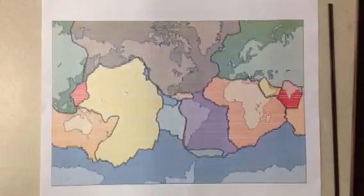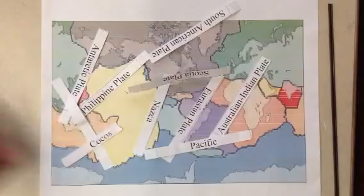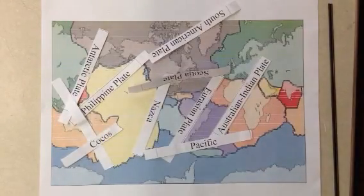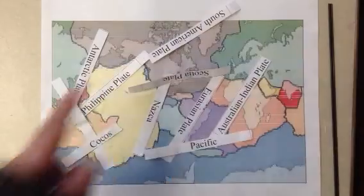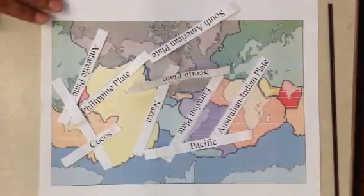The plate tectonics theory suggests that beneath the lithosphere of the earth are twenty or so plates that collide and grind against each other to shape the planet. Some of these are the Eurasian, Australian Indian, Philippine, Pacific, North American, Cocos, Caribbean, Nazca, South American, Scotia, African, and Antarctic plates.